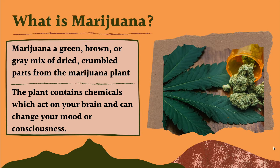The marijuana plant grows from the ground. People harvest it and let it dry out until it becomes really dry and turns into these crumbled, greenish-brown pieces. They ball it up really tight so it's all crumbled. People use the dried form of it — they don't just use it from the leaves.